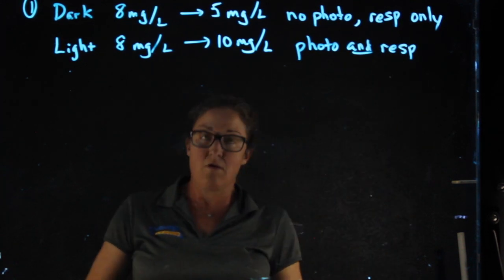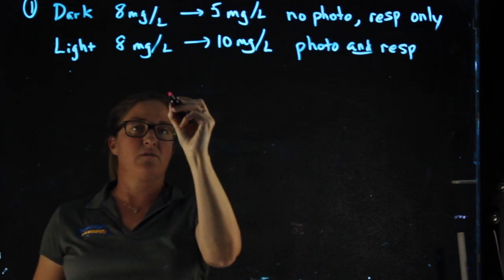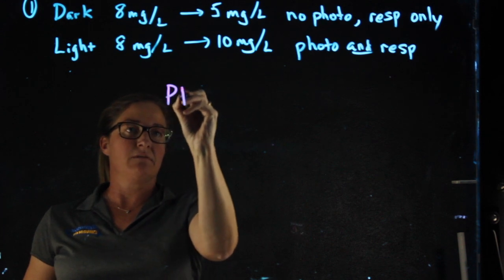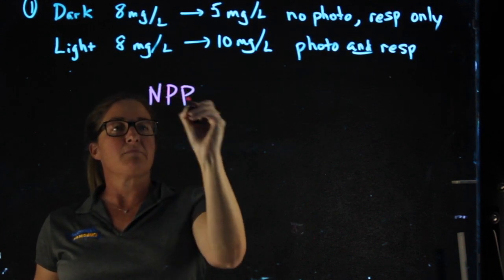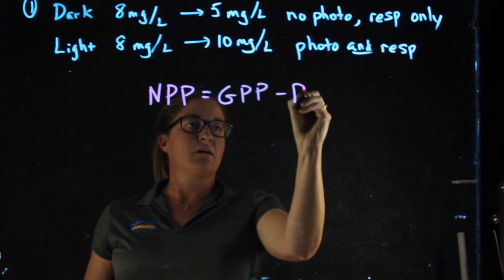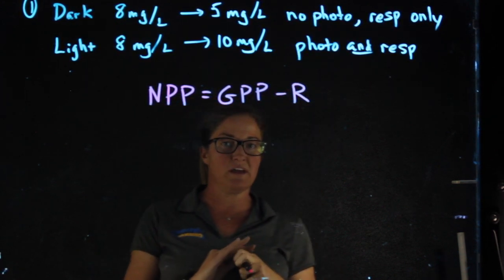From this, we can figure out a few of these things. First of all, this is primary productivity because it's a producer. And net primary productivity equals gross primary productivity minus R, R being respiration.